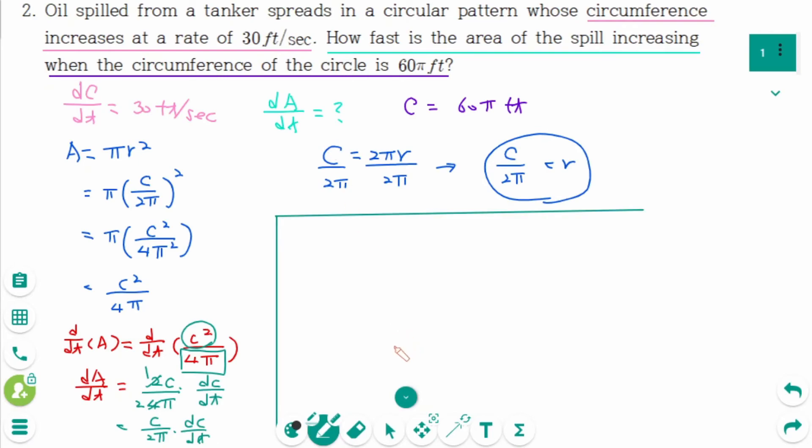Now plug in all the information. dA/dt equals C is 60 pi over 2 pi times dC/dt is 30. Then pi is cancelled, and 30 times 30 is 900 feet squared per second.